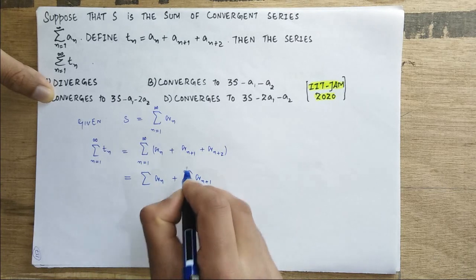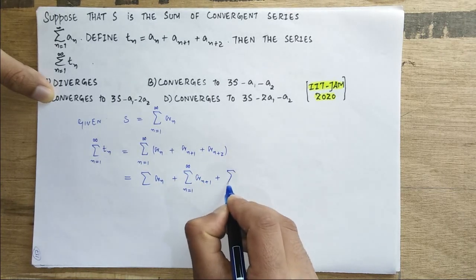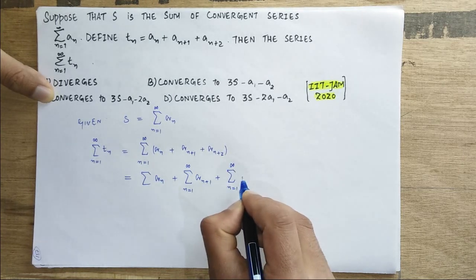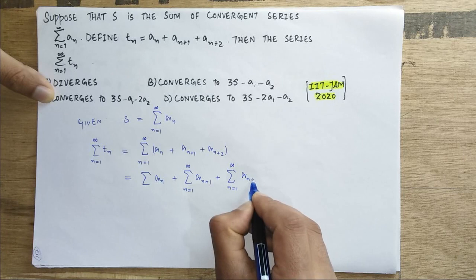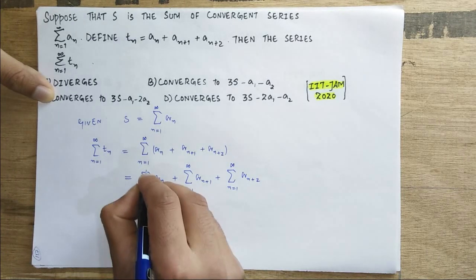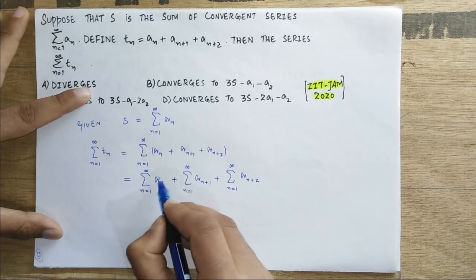n is from 1 to infinity. Then summation n runs from 1 to infinity, a_n plus a_(n+1) plus a_(n+2). First of all, we have to check whether it is convergent or not. If you can see, this is a convergent series.